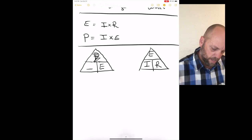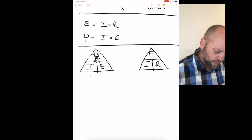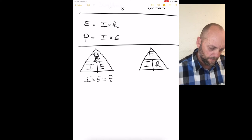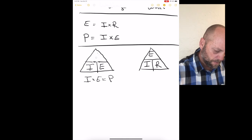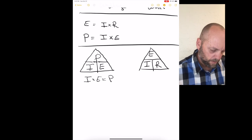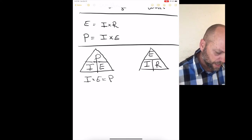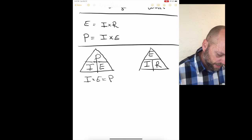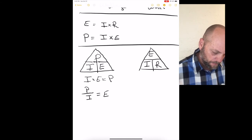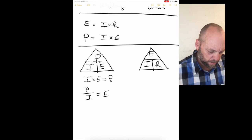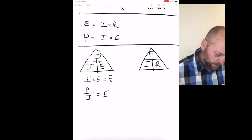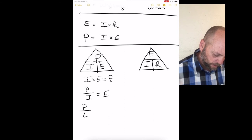Then you would multiply I times E equals P. Now, using that same triangle, if they're asking you for voltage, cover up E, and it would be P over I equals E. And if they're looking for current or amperage, you would cover up the I, and you would have P over E equals I.